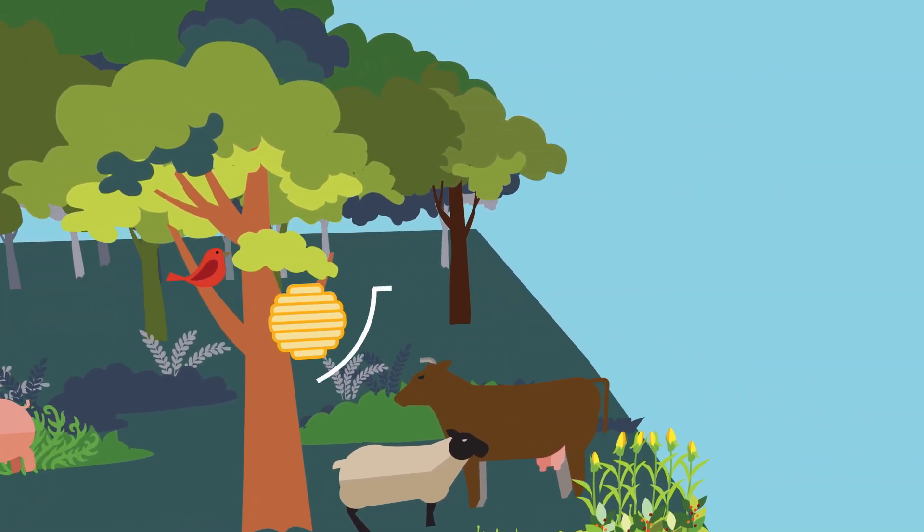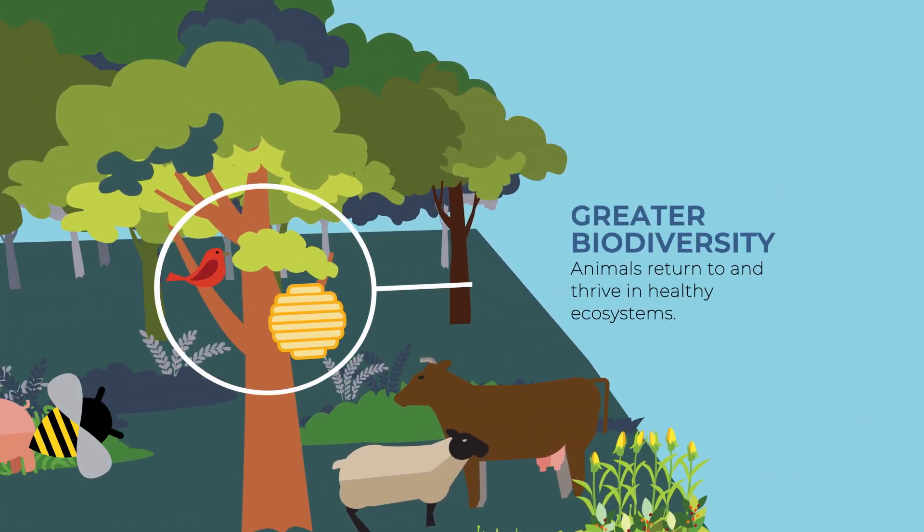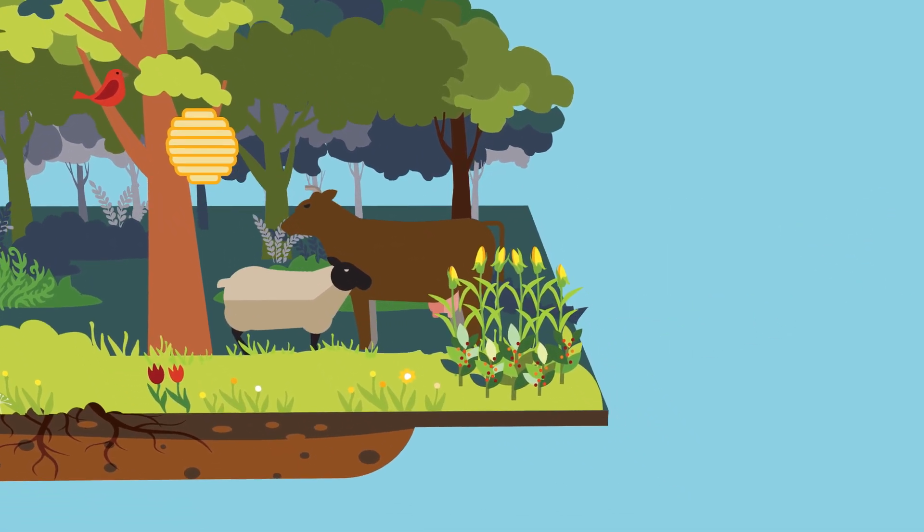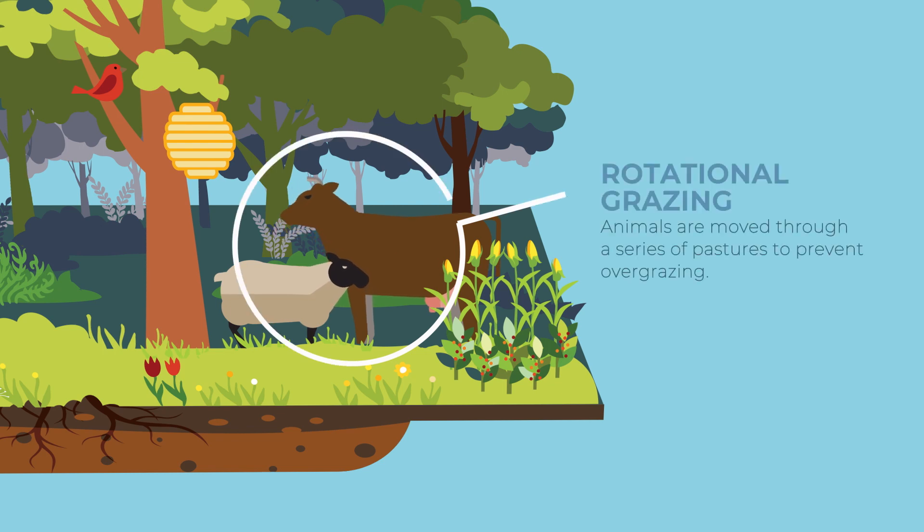When an ecosystem is healthy, wildlife return to it, increasing its biodiversity and sustainability even more. By rotating livestock through different pastures, we can prevent overgrazing and improve soil quality over time.